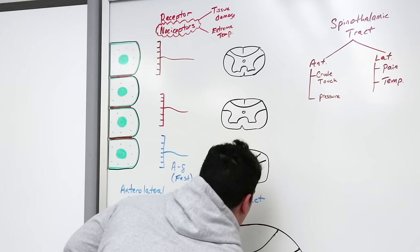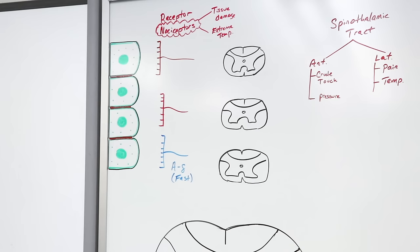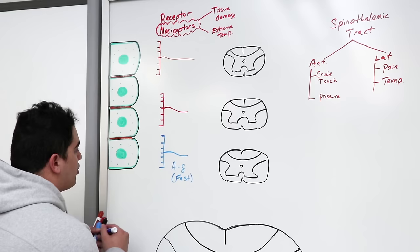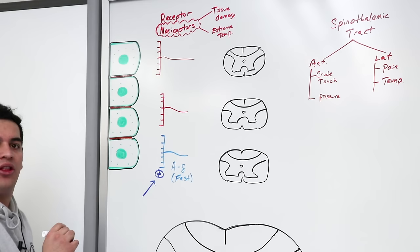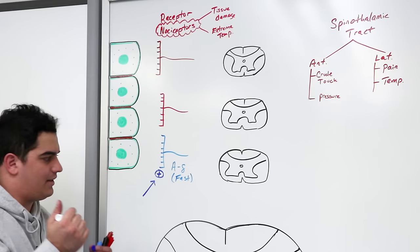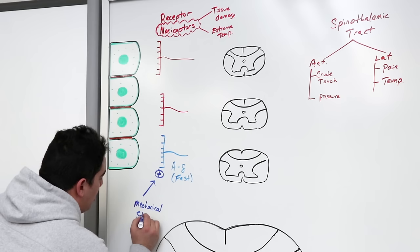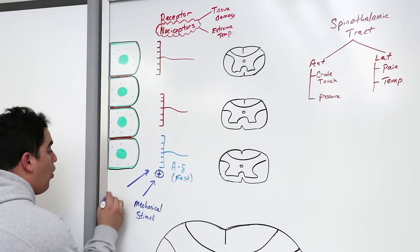There are only two main things that stimulate A-delta fibers: mechanical stimuli — like smashing your finger with pliers — and thermal sensations, specifically really cold temperatures. The A-delta fiber mainly responds to mechanical stimuli and cold temperatures.